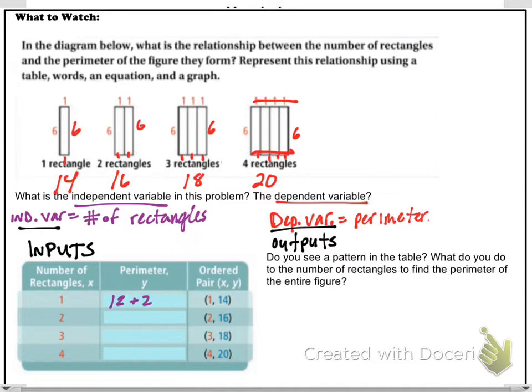First one, we get 12 plus 2. Second one, we get 12 plus 4. 12 plus 6. 12 plus 8. There's our total perimeters giving us this set of ordered pairs.